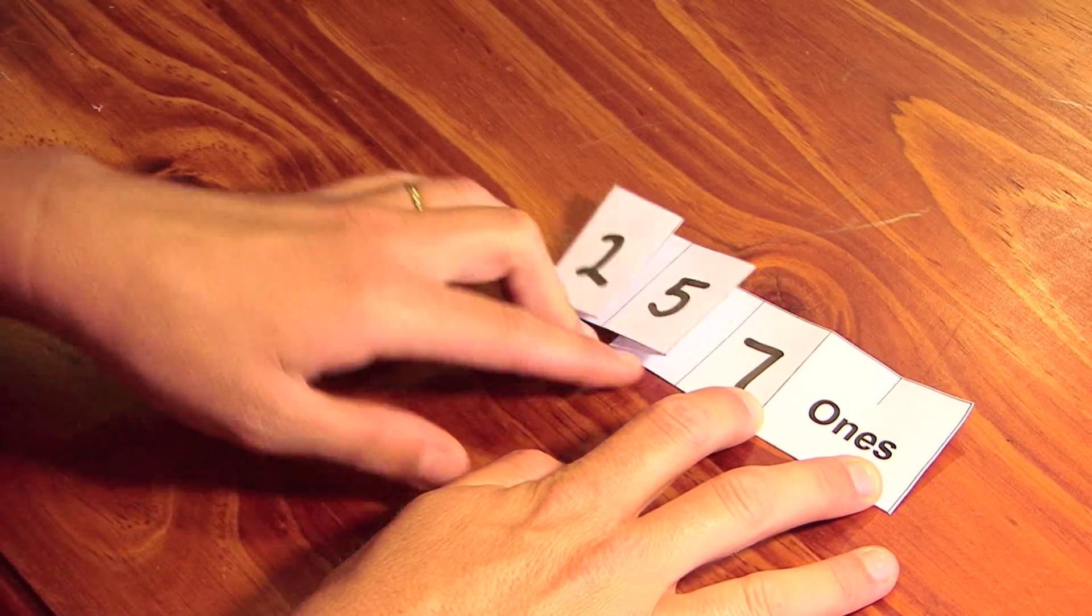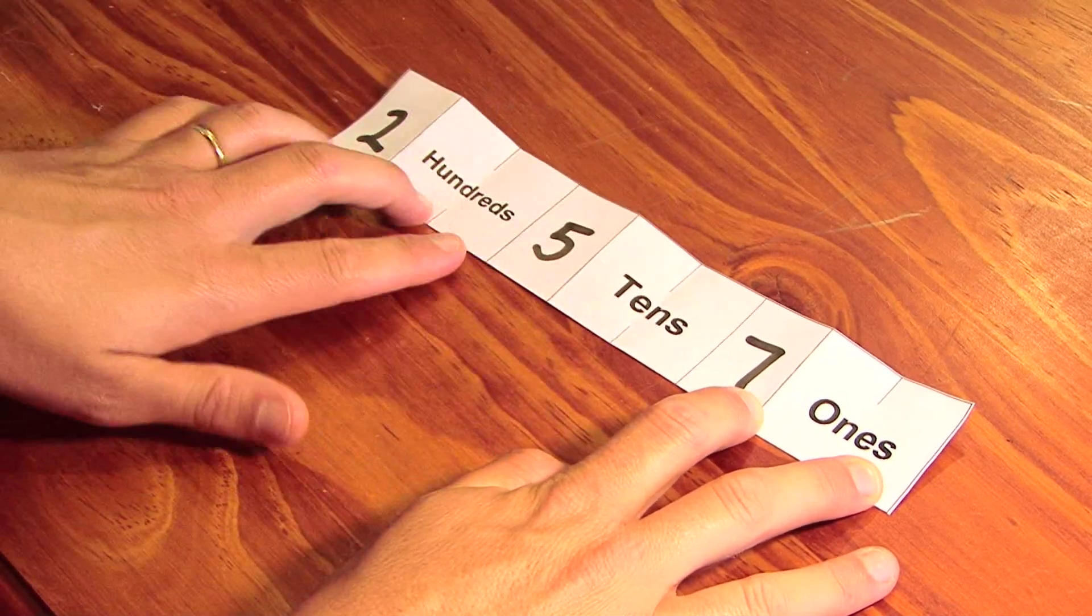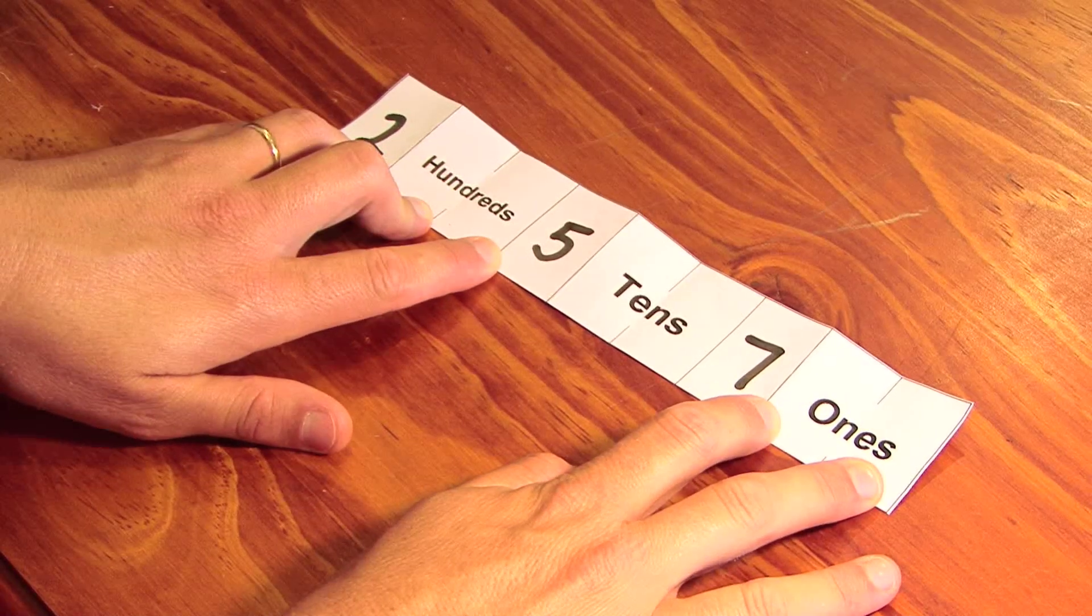Just expands the number out. Or 2 hundreds, 5 tens and 7 ones.